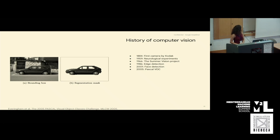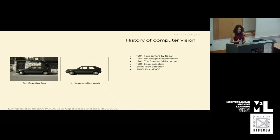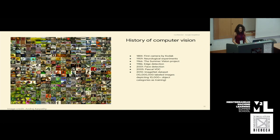In 2005, the Pascal challenge starts. In the Pascal challenge, there is an image dataset where every image has been annotated with a bounding box or a segmentation mask, with a few object categories like car and motorcycle. Such image dataset challenges are usually considered helpful in advancing the field. Coming to 2010, there's the ImageNet dataset with over 10 million labeled images and over 10,000 object categories as training — that's quite a large-scale dataset.